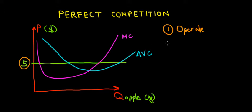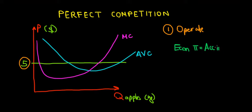We're going to think about economic profits, and I'll write the difference between economic profits and business profits — accounting profit. Economic profit is the difference between accounting profit and the opportunity cost. Accounting profit is the actual money that we keep in our pocket — the business result, what's coming from selling apples.